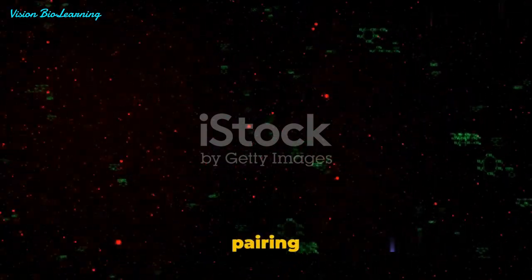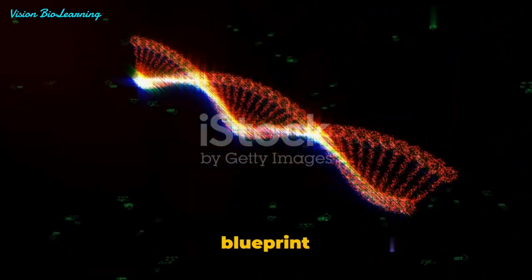This DNA, a double helix held together by simple pairing rules, A with T, G with C, is the blueprint of who we are.